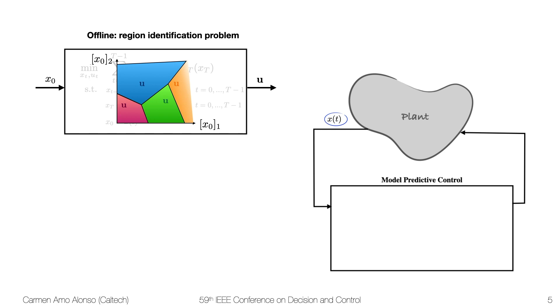So offline we can solve the region identification problem, meaning computing the different regions for the different pieces of the control input. This is usually computationally expensive, but that's okay because all the computation occurs offline. And then the online problem just boils down to a point location problem, where we just need to find in which region the initial condition lies and retrieve the input from there. So with this approach we're effectively moving most of the complexity to an offline problem, so the online problem is simple enough that it can be computed fast.